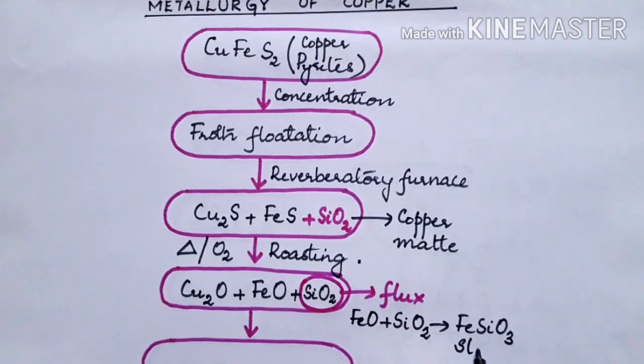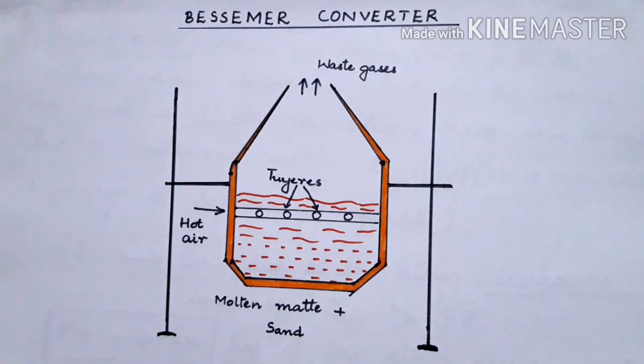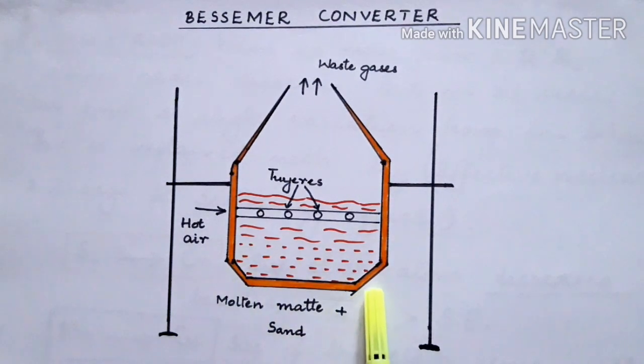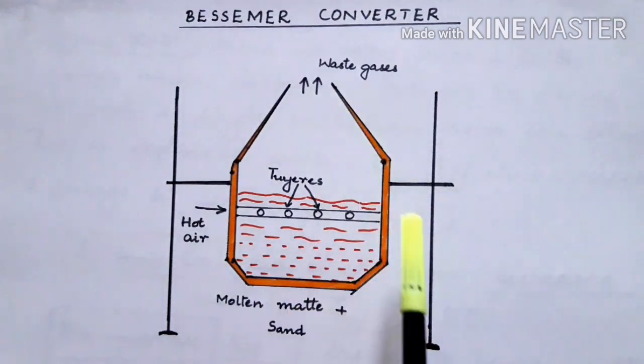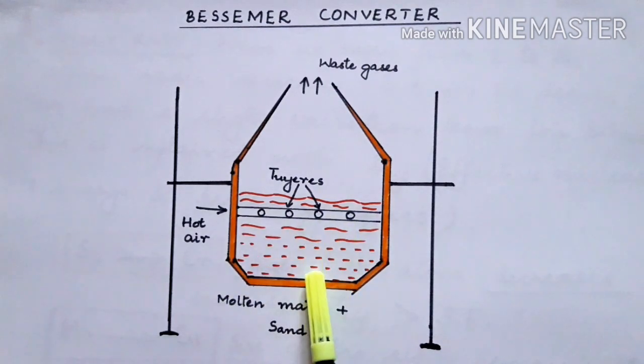This remains as the slag. All this happens in a special type of vessel which is known as Bessemer Converter. Bessemer Converter is a shallow furnace which is made up of steel and it is lined with magnesite. That is, it has a basic lining inside and we are having hot air tuyeres to heat the substance present in it.